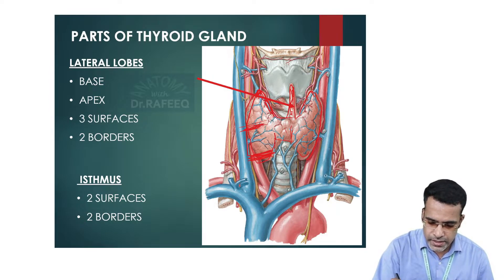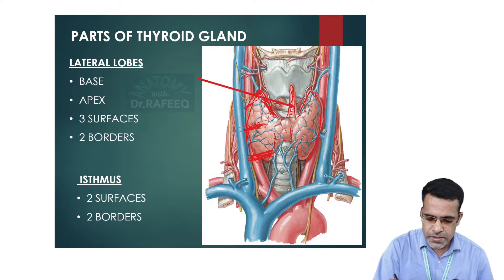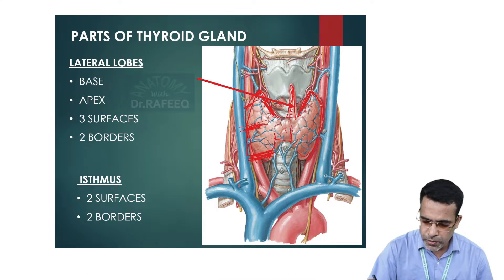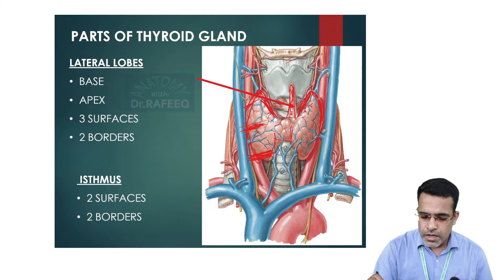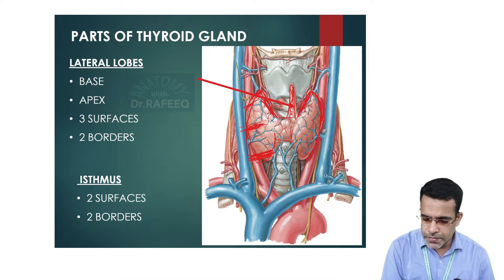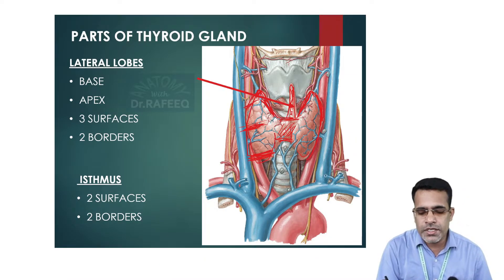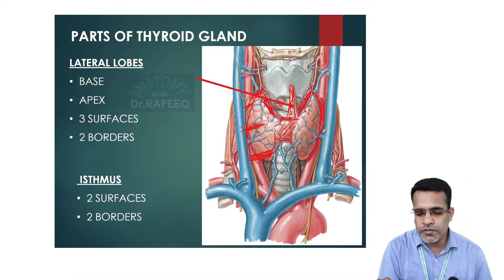The lateral surface, medial surface, and posterolateral surface form the three surfaces of each lobe. There are two borders: the anterior border and the posterior border. The isthmus has upper and lower borders and two surfaces — an anterior surface facing forward, and a posterior surface in relation with the trachea behind.